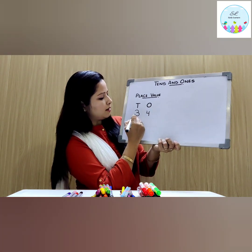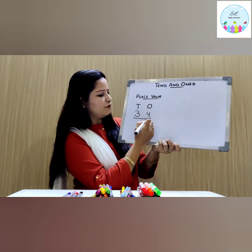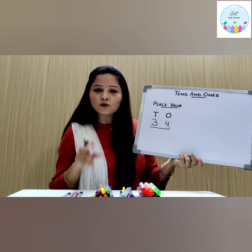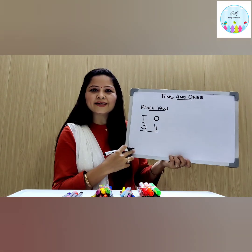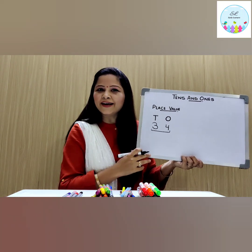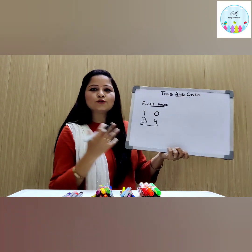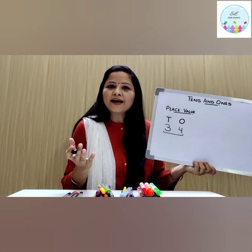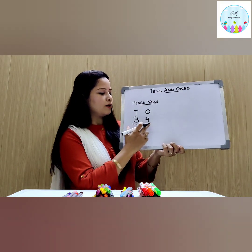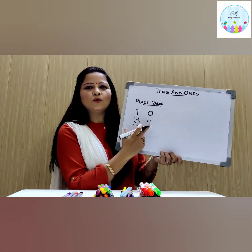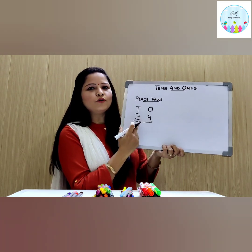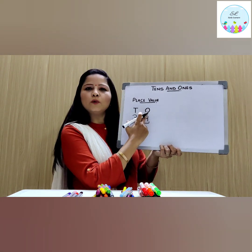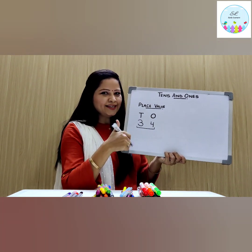So how will we write 4 ones? 4 under O, that is ones. What is the number that we got? It's 3 and 4 — 34. That means I have 34 sketch pens in total. That's a wonderful way to learn! This is how we represent this number under T and O — it represents the place value of these numbers. That means 3 is at tens place and 4 is at ones place.